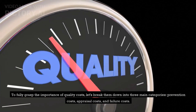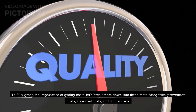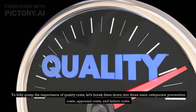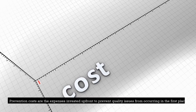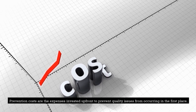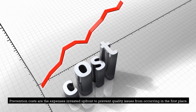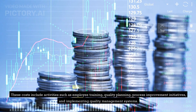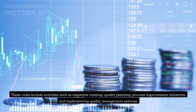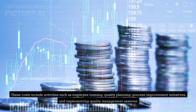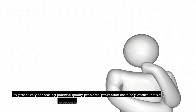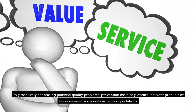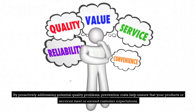To fully grasp the importance of quality costs, let's break them down into three main categories: prevention costs, appraisal costs, and failure costs. Prevention costs are the expenses invested up front to prevent quality issues from occurring in the first place. These costs include activities such as employee training, quality planning, process improvement initiatives, and implementing quality management systems. By proactively addressing potential quality problems, prevention costs help ensure that your products or services meet or exceed customer expectations.